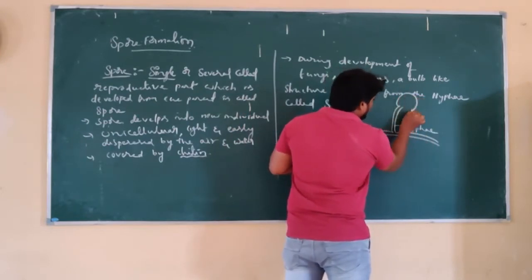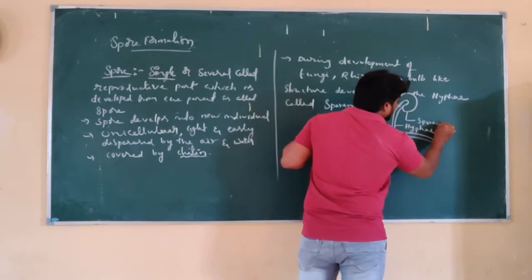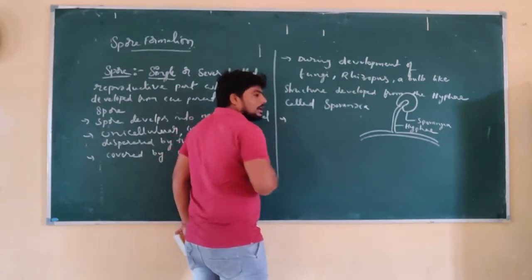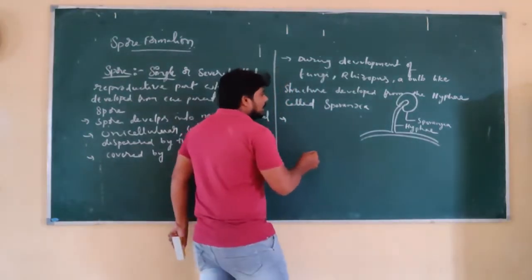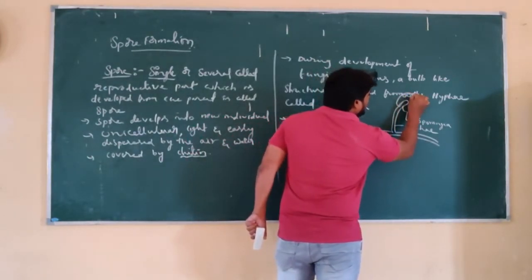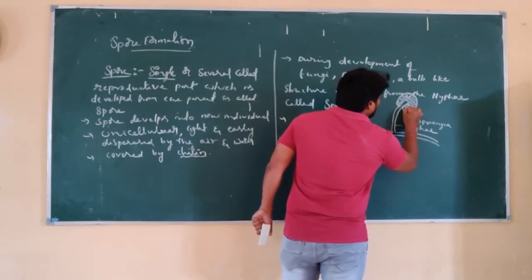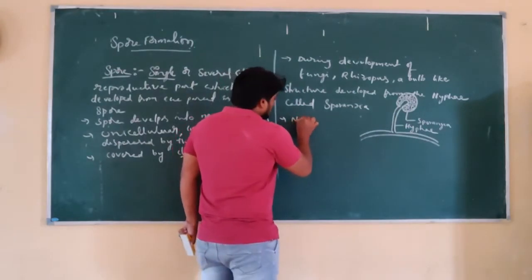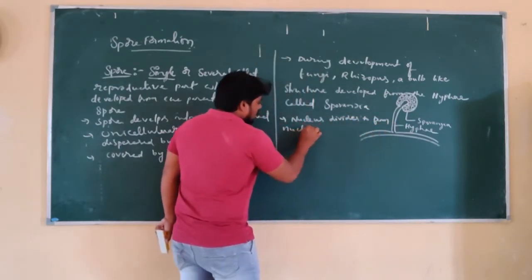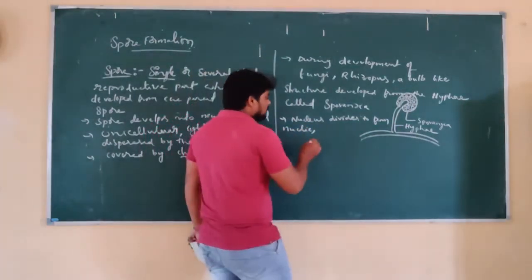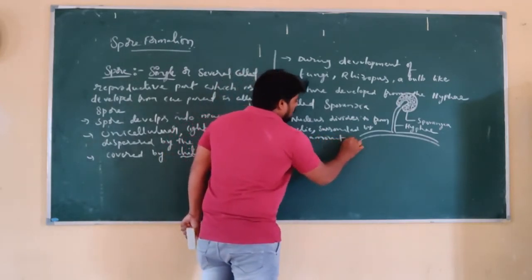On the hyphae, there is a development of a bulb-like structure called as sporangia. Inside the sporangia, the nucleus undergoes repeated division to form many nuclei. Each nucleus is surrounded by some amount of cytoplasm.